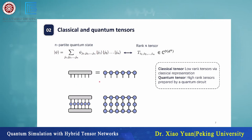We call it a classical tensor if it is a low-rank tensor or a network of low-rank tensors. We call it a quantum tensor if it is a high-rank tensor prepared by a quantum state. We want to distinguish these two concepts because even though they are mathematically defined in the same language, in practice when we contract these tensors we do it differently. When we contract a quantum tensor, we realize the state and then measure the observables. For a classical tensor, we do it classically, just using matrix multiplication.